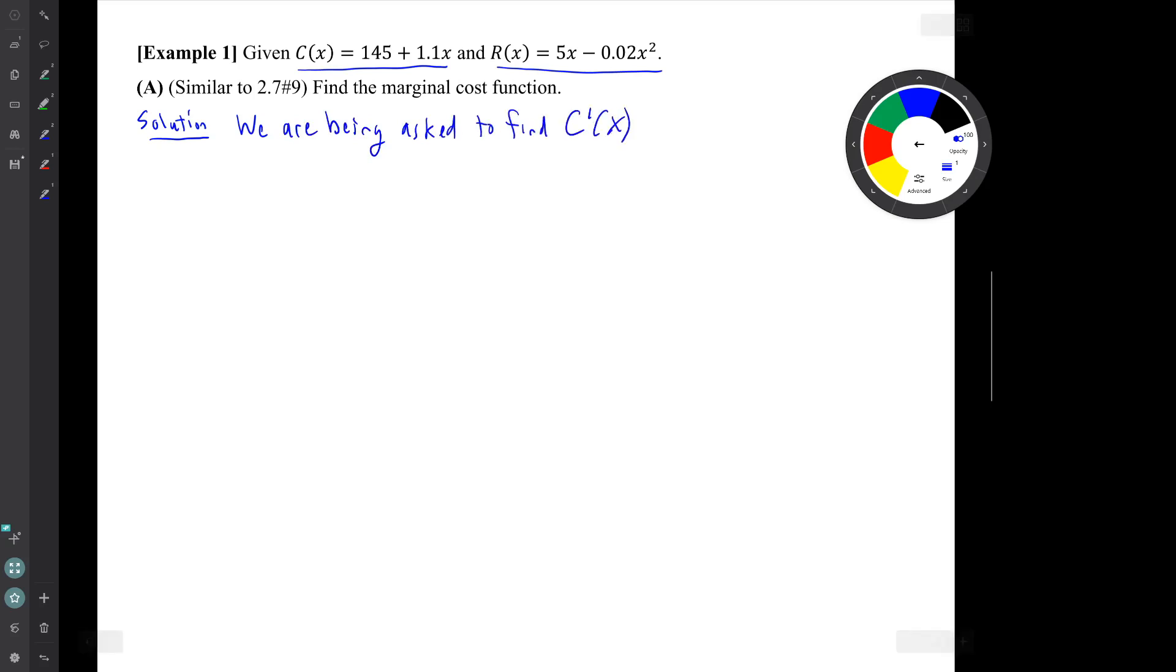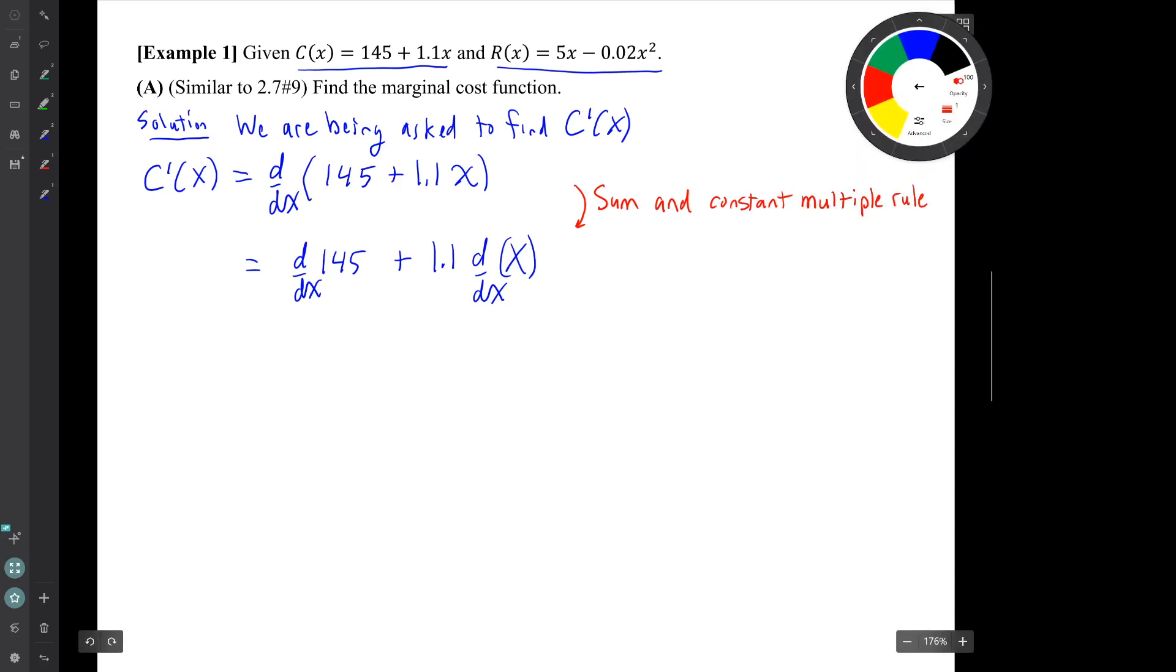So the solution is we have to find capital C prime parentheses x. So we'll set this up just like we do in the other derivative problem. So here we use the sum and constant multiple rule. Notice the constant multiple 1.1 slipped past that derivative symbol, but the constant function 145 stays inside, has to have its derivative taken.